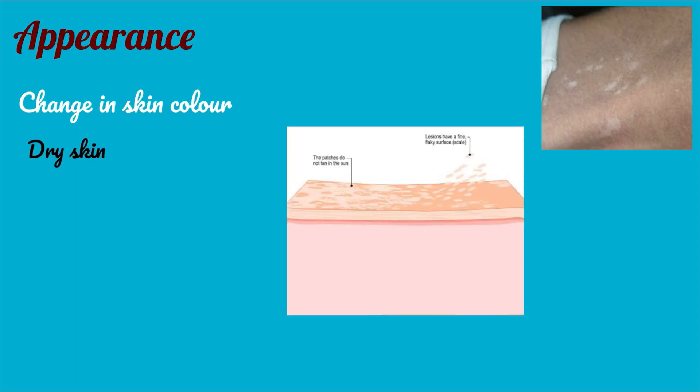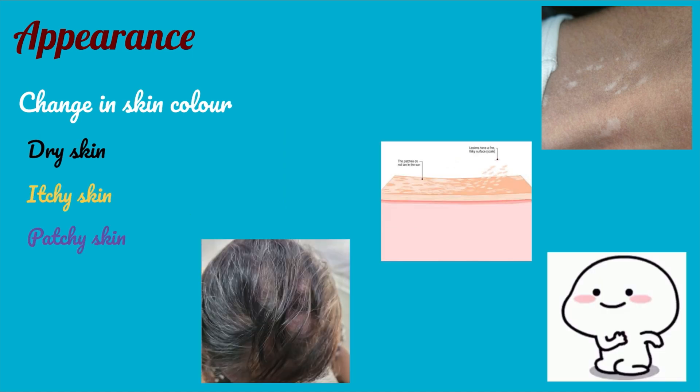Now if we talk about the clinical features — that is the appearance, how does it look. The most visible symptom is change in skin color. The discolored patches usually appear on the arms, chest, back, and neck. It can also extend up to the hair and head region. The skin appears hypopigmented, meaning white patches are visible. The skin can also be dry, itchy, and patchy.